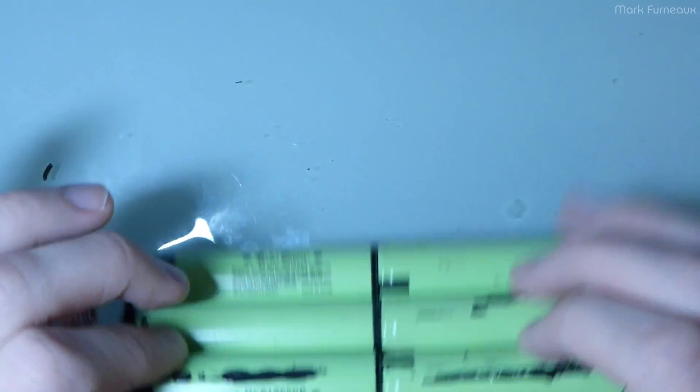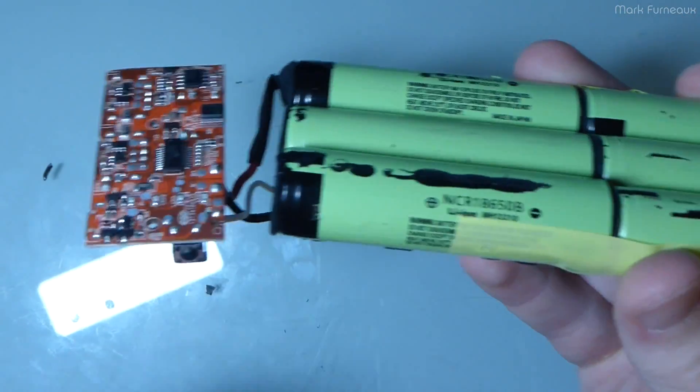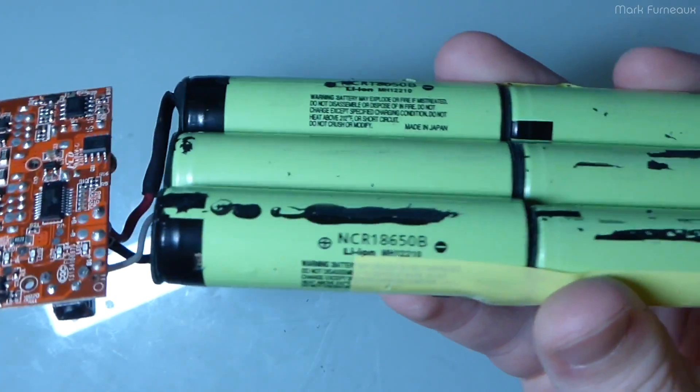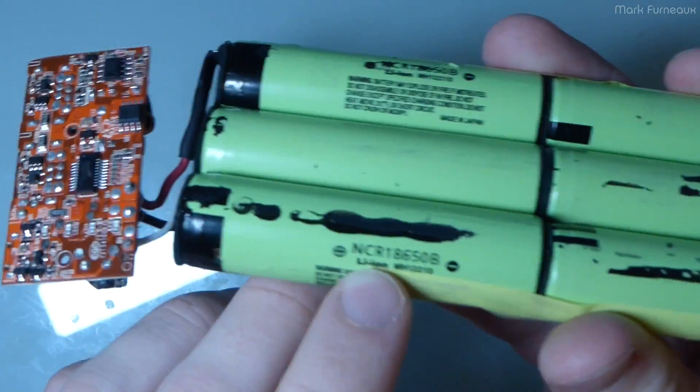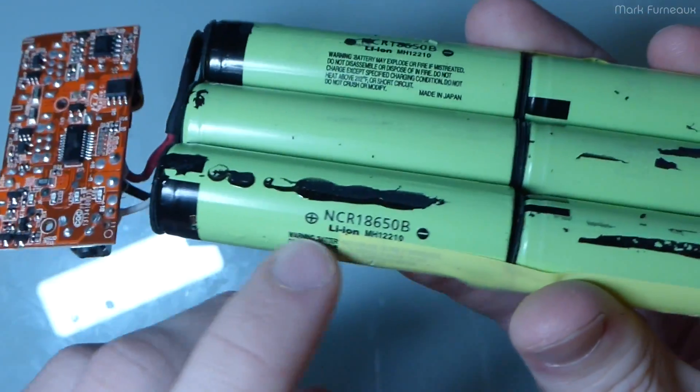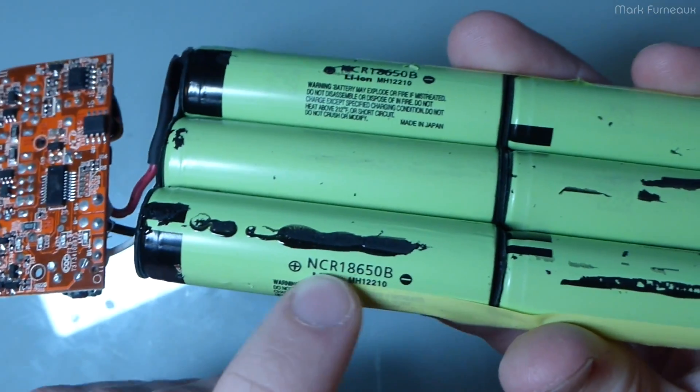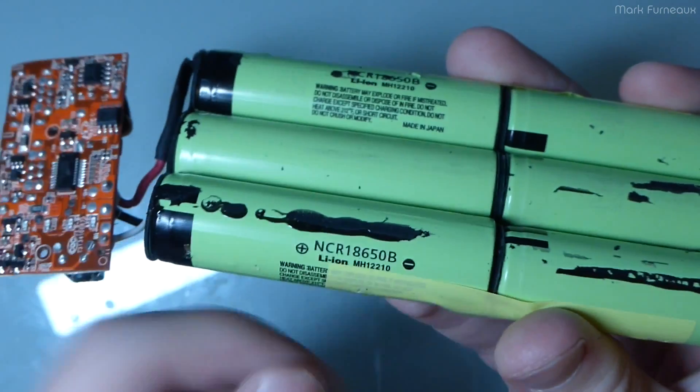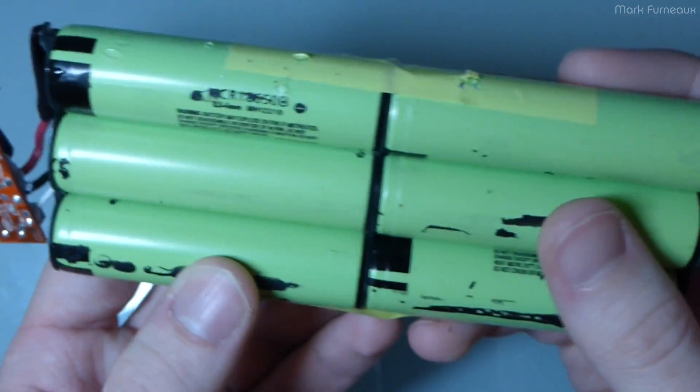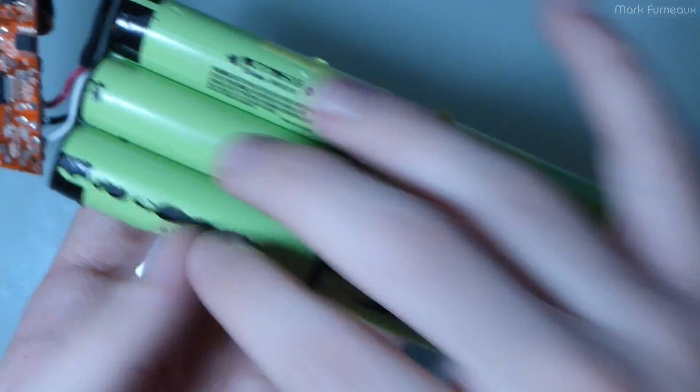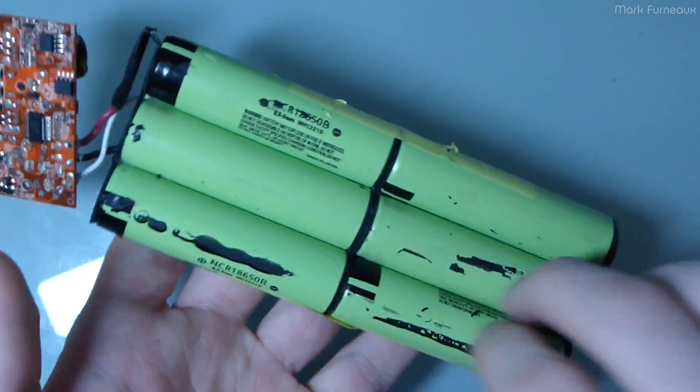These cells are made by Panasonic, which is, I believe they're actually the world's largest battery manufacturer. Please correct me if I'm wrong, but I believe they are. They have, I think, exclusive contracts with companies like Tesla for their motor vehicle, stuff like that. This is the NCR 18650B, which is a 3,400 milliamp hour lithium ion cell. And of course, there are six of them.